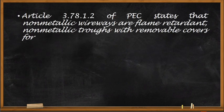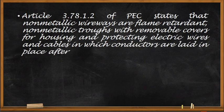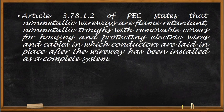Article 3.78.1.2 of the Philippine Electrical Code states that non-metallic wireways are flame-retardant non-metallic troughs with removable covers for housing and protecting electric wires and cables, in which conductors are laid in place after the wireway has been installed as a complete system. Being flame-retardant means the material will not allow flame to grow once heated.